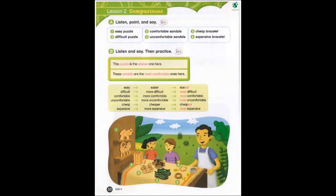Page 32. Lesson 2: Comparisons. A. Listen, point, and say. One: easy puzzle. Two: difficult puzzle. Three: comfortable sandals. Four: uncomfortable sandals. Five: cheap bracelet. Six: expensive bracelet.